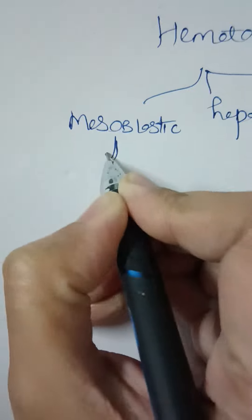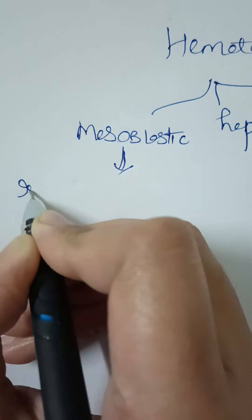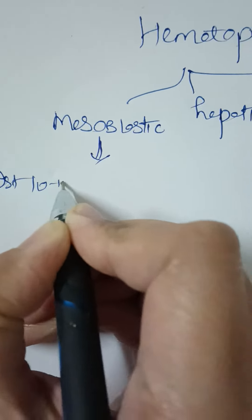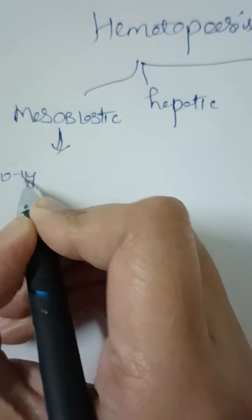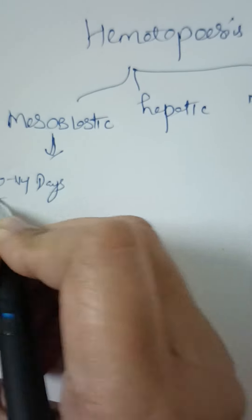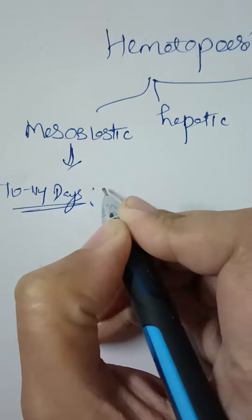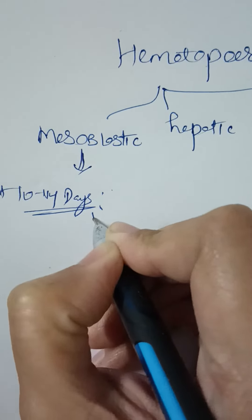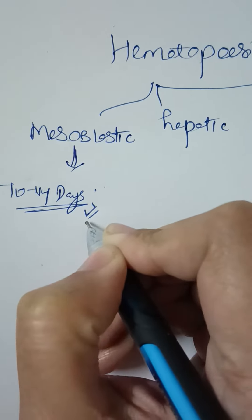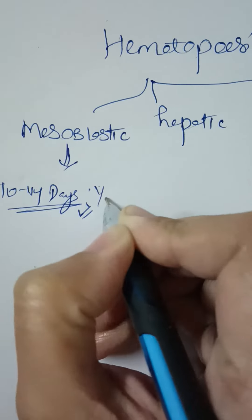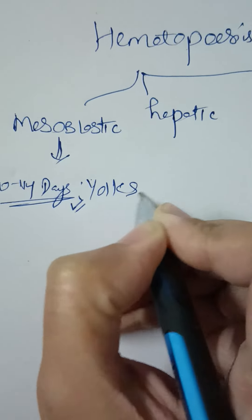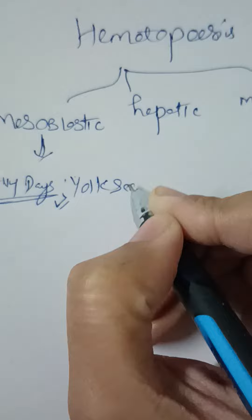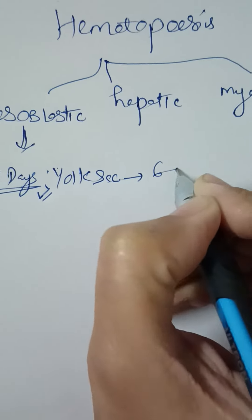First of all, hematopoiesis begins in the first 10 to 14 days of gestation. It occurs within the yolk sac, up till 6 to 10 weeks.